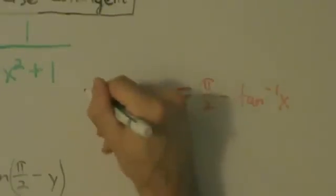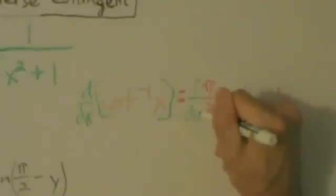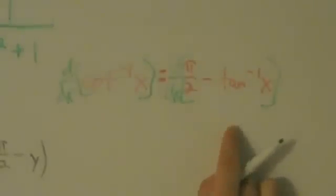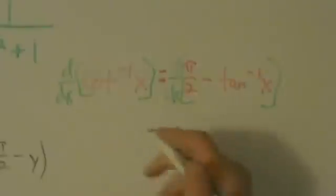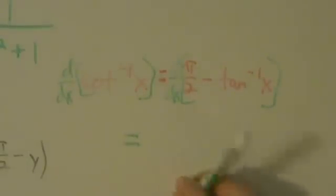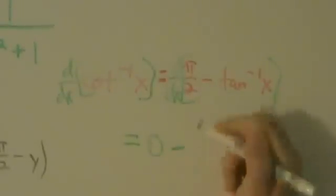Now if we take the derivative of both sides, we have d/dx of inverse cotangent of x equals d/dx of pi over 2 minus inverse tangent of x. Differentiating term by term: the derivative of pi over 2 is 0, and then minus the derivative of inverse tangent of x, which is 1 over x squared plus 1. The 0 goes away, and we're left with negative 1 over x squared plus 1. That's the derivative of the inverse cotangent function.